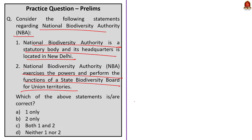Coming back to the NBA question: Statement 1 is partially incorrect — NBA is indeed a statutory body, but its headquarters is in Chennai, not New Delhi. Statement 2 is correct — NBA exercises the powers of State Biodiversity Board for Union Territories. The correct answer is option B — only two.